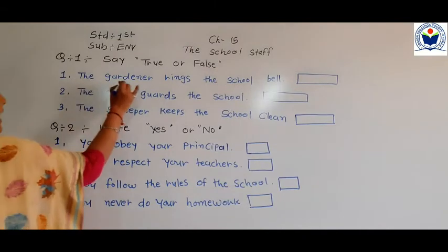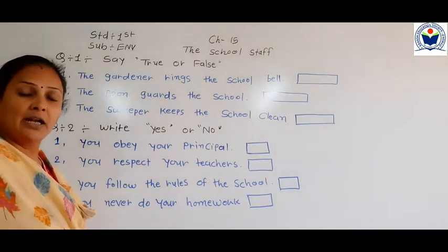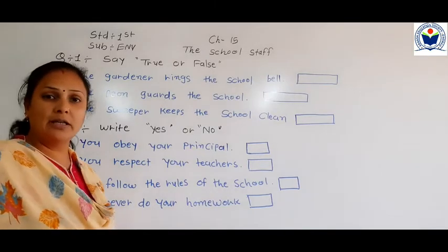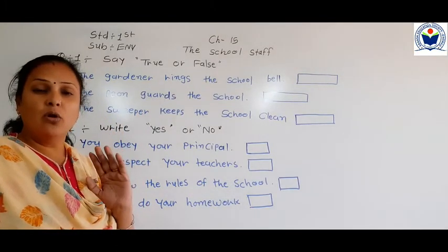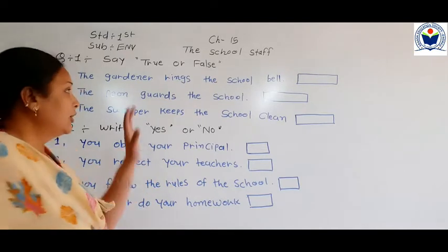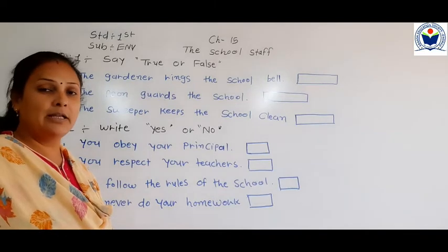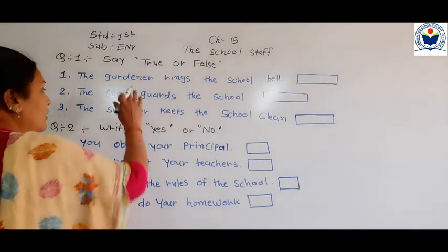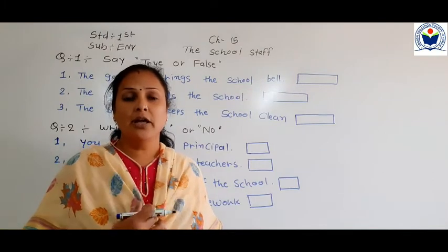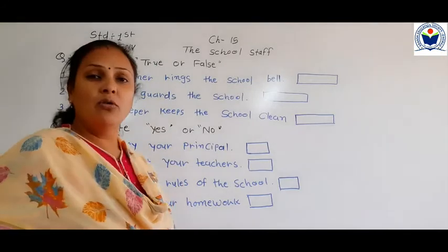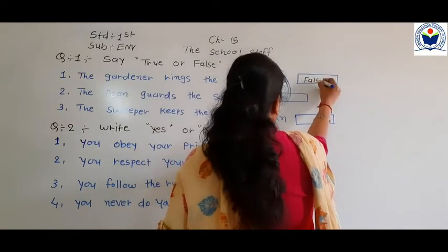Question number 1: 'The gardener rings the school bell.' Gardener का काम क्या है? Gardener garden को neat and clean रखता है, उसकी care करता है। तो क्या gardener school की bell बजाता है? यह sentence true है या false? Very good — यह false है।